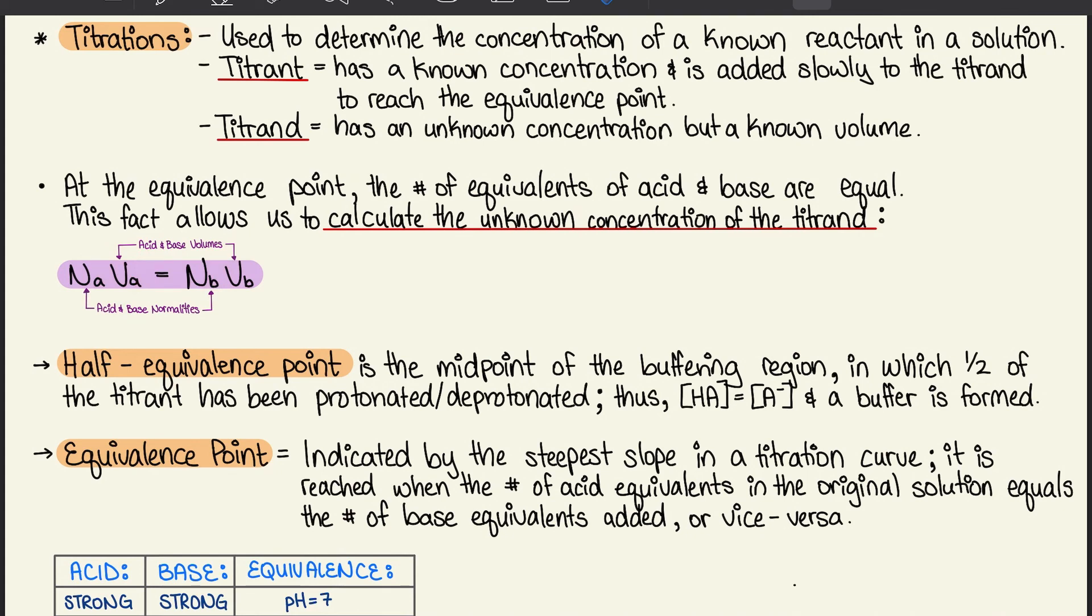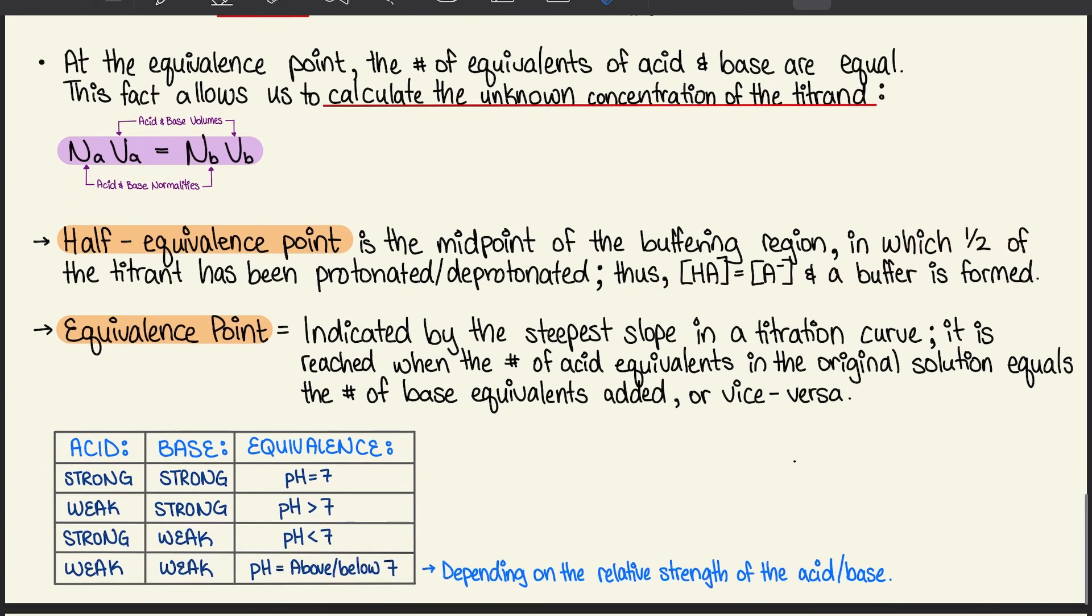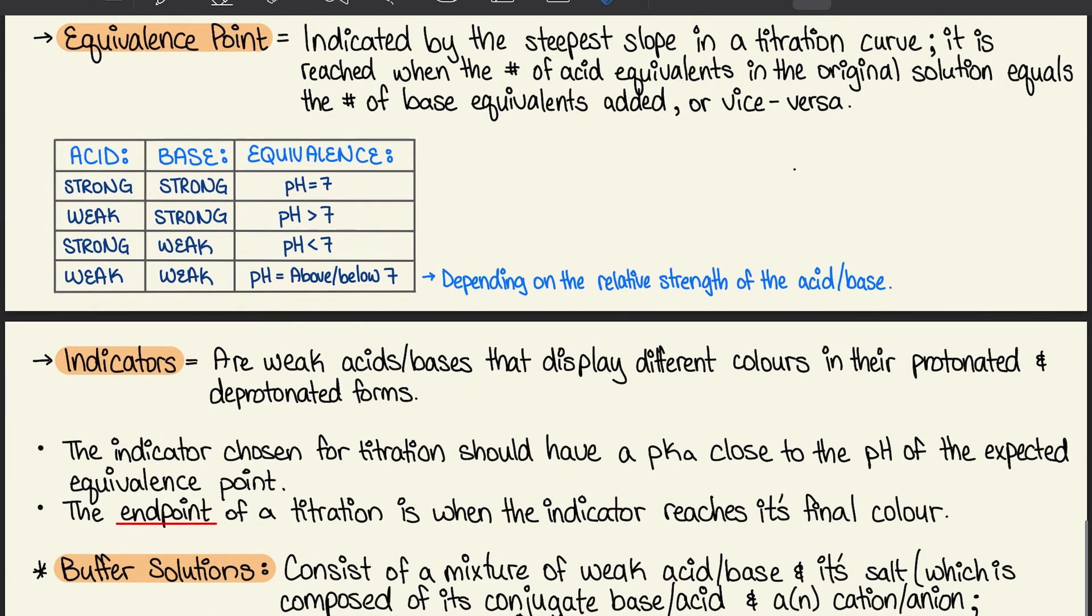The half equivalence point is the midpoint of the buffering region in which half of the titrand has been protonated or deprotonated, and thus HA equals A-, and a buffer is formed. The equivalence point is indicated by the steepest slope in the titration curves and is reached when the number of acid equivalents in the original solution equal the number of base equivalents added or vice versa.